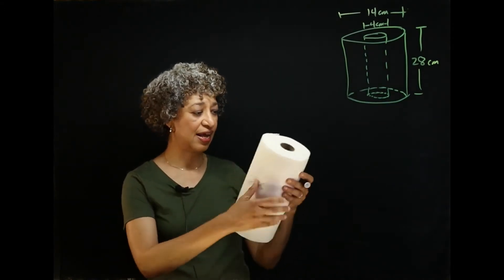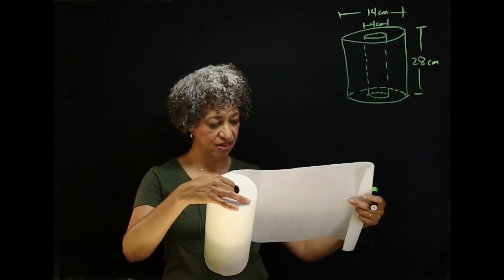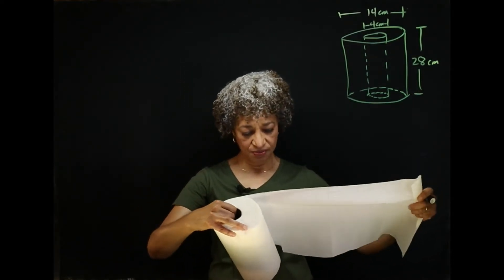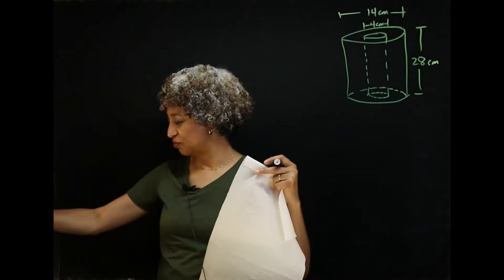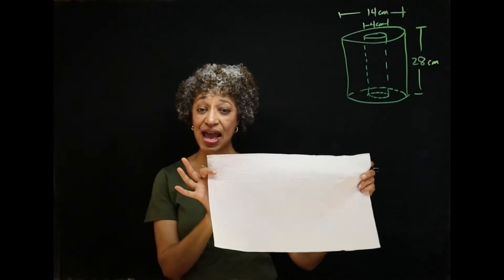Now, to get the outer surface, I have kind of eyeballed this. If I tear it, it will be one trip around the roll of paper towels. And so, when I open up that roll, we have a rectangle.